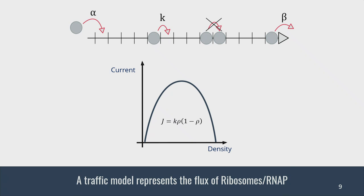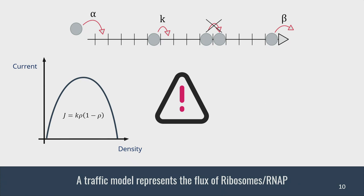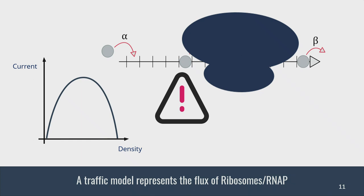In the simplest case, we have a flux that depends on the density rho, and you get saturation if the density gets too high. A fair warning: all the equations shown here are for the case where the particle size over the lattice is one, which is rarely the case. In the cell, ribosomes are more this size. We can still solve analytically all the equations, but for simplicity I just show the case where size equals one.